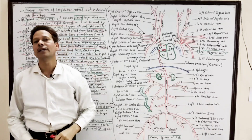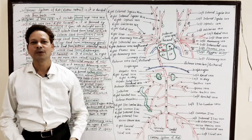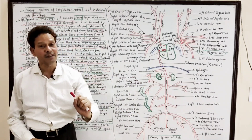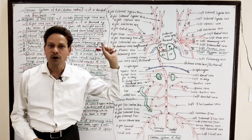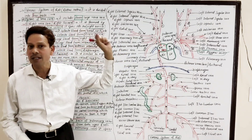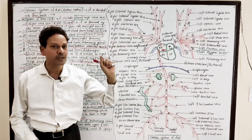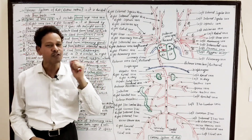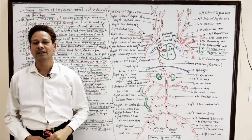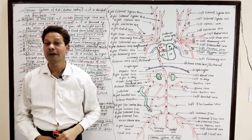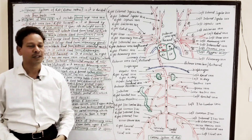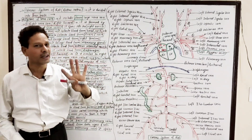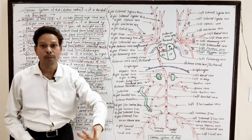Dear students, in today's lecture I will discuss the venous system of rat. In our last lecture we discussed the arterial system of rat. And in today's lecture I will cover the venous system of rat. This entire system is divided into four parts.